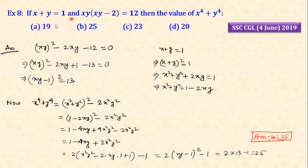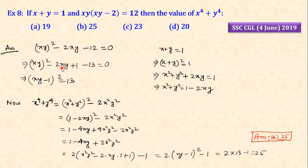If x plus y equals 1 and xy(xy minus 2) equals 12, find the value. This is an interesting and different type of question. We use: x plus y whole square minus 2xy into minus 12, and the whole square child does whole square, giving whole square equal to 13.